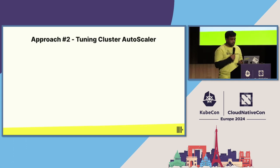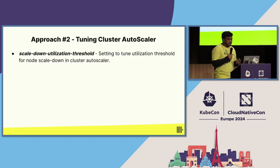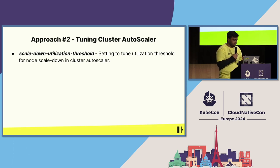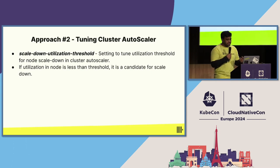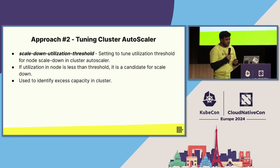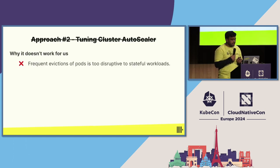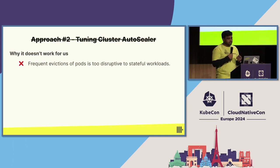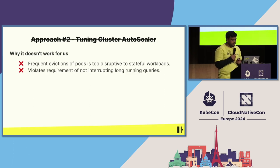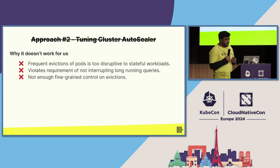The second approach was tuning cluster autoscaler. Cluster autoscaler has a setting to specify a utilization threshold — if utilization on a node falls below that threshold, pods on that node are evicted and the node is marked as a candidate for scale down, considering pod disruption budgets and tolerations. This is handy for identifying excess capacity, but we didn't adopt it because frequent evictions of pods are too disruptive for stateful workloads like a database, and it would interrupt long-running queries.